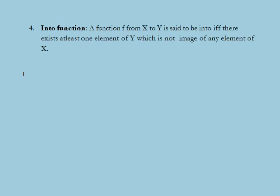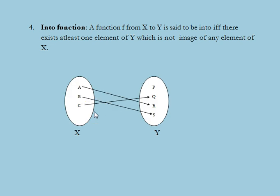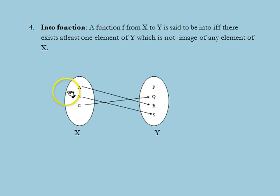Next we discuss into functions. A function f from x to y is called an into function if and only if there exists at least one element in y which is not the image of any element of x — that means if and only if the range of f is a proper subset of the co-domain of f, or equivalently, f is not onto. In this example, x has elements a, b, c and y has elements p, q, r, s. Since p is not the image of any element of x, this function represents an into function.